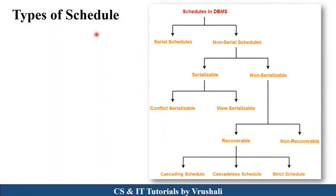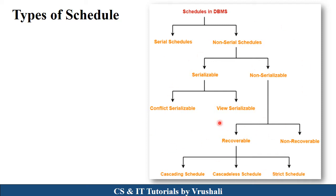Schedules are divided into two main types: serial schedule and non-serial schedule. Non-serial schedule is again divided into two types: serializable and non-serializable. Serializable is divided into two types: conflict serializable and view serializable. Non-serializable is divided into two types: recoverable and non-recoverable. Recoverable schedule can further be divided into three types: cascading, cascadeless, and strict schedule. All these types of schedules are mentioned in your syllabus.